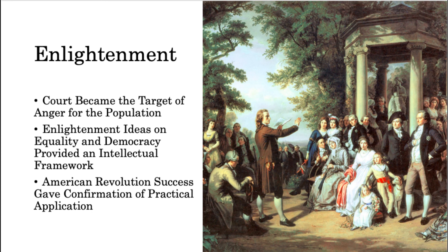Although Louis was not indifferent to the crisis, he tended to back down when faced with any kind of opposition. The court became the target of anger for the population, especially Queen Marie Antoinette, who was viewed as a spendthrift Austrian spy and blamed for the dismissal of more progressive ministers. For their opponents, Enlightenment ideas on equality and democracy provided an intellectual framework for dealing with these issues, and the recent success of the American Revolution was seen as confirmation of their practical application.